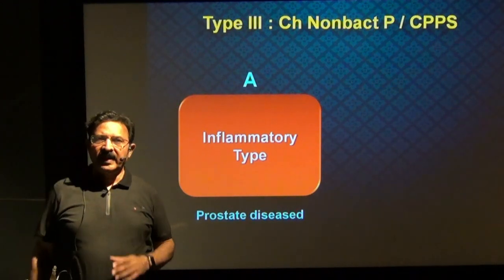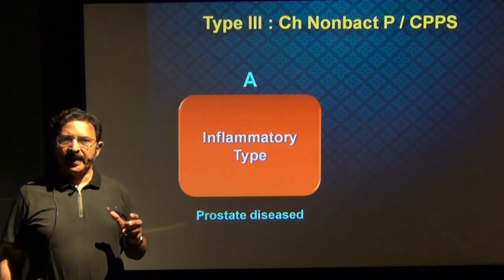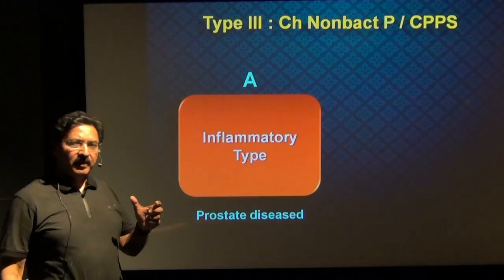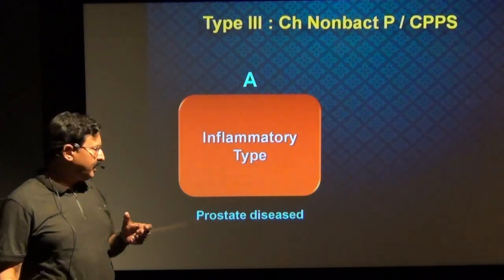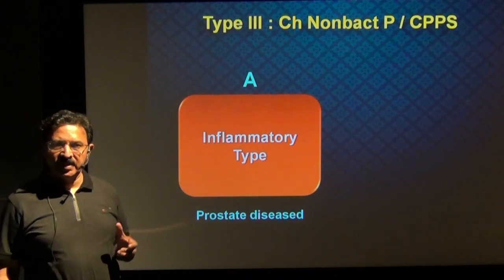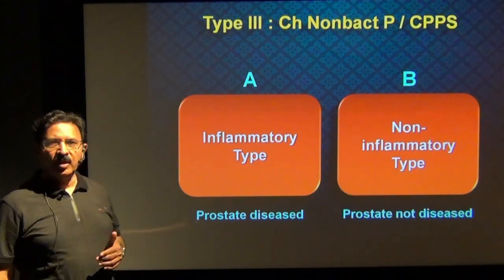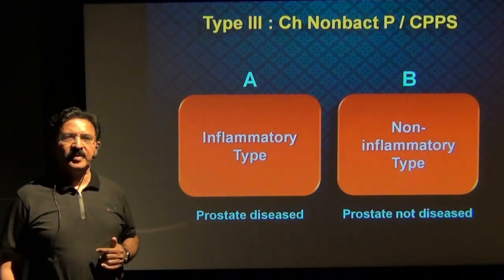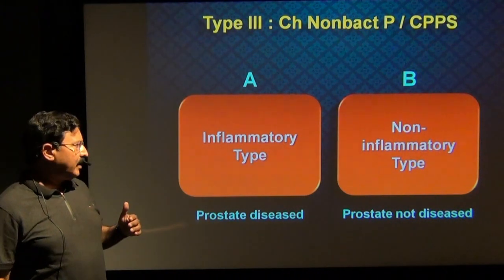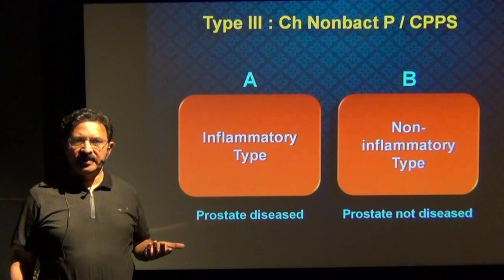Essentially, you can divide type 3 chronic prostatitis into two subtypes. One is the inflammatory type, where there is some degree of inflammation within the prostate gland and you will find by clinical methods and investigations that the prostate is diseased. But a huge subset of patients have what is called a non-inflammatory type of non-bacterial prostatitis, where the prostate is not the seat of disease.